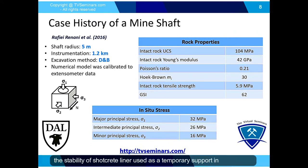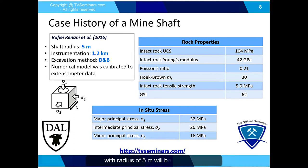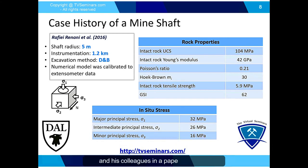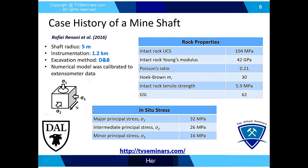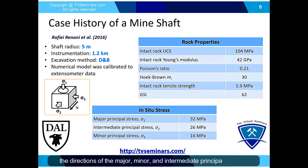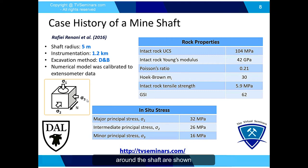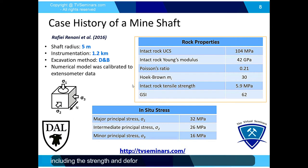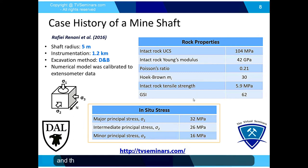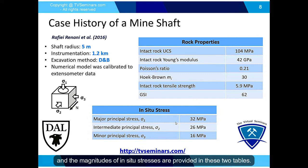In this study, the stability of a shotcrete liner used as temporary support in a mine shaft with a radius of 5 meters will be evaluated. This case history was described by Rafi Ranani and colleagues in a paper published in Rock Mechanics and Rock Engineering in 2016. In this particular shaft, four extensometers were installed at a depth of 1.2 kilometers, and the excavation method is drill and blast. The directions of major, minor, and intermediate principal stresses around the shaft are shown, with the major principal stress direction parallel to the axis of the shaft. Geotechnical data including strength and deformation properties of intact rock and the rock mass, and the magnitudes of in-situ stresses, are provided in the tables.